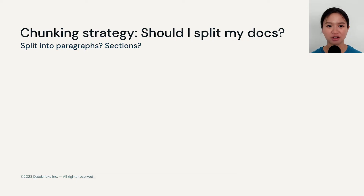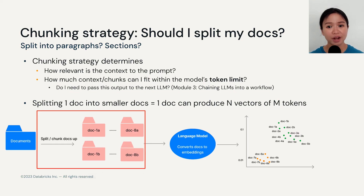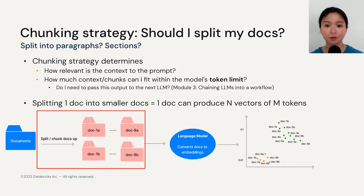Now on to document storage strategy. I'll preface this with a caveat that how to best store your documents is still not very well defined, but I'll share some points for your consideration. When it comes to document storage, we have two choices: either store a document as a whole document, or store a single document by chunks — meaning we split a document up into multiple chunks. Each chunk could be a paragraph, a section, or really anything you arbitrarily define, meaning one document can produce many vectors.